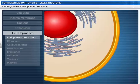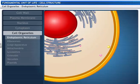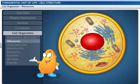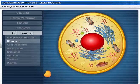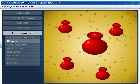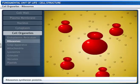Endoplasmic reticulum serves as channels for the transport of proteins between various regions of the cytoplasm. These small spherical granules are ribosomes, found scattered in the cytoplasm or attached to the outside of the endoplasmic reticulum. These are naked and have no membrane. Ribosomes synthesize proteins.